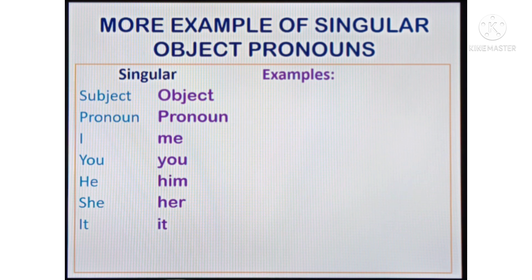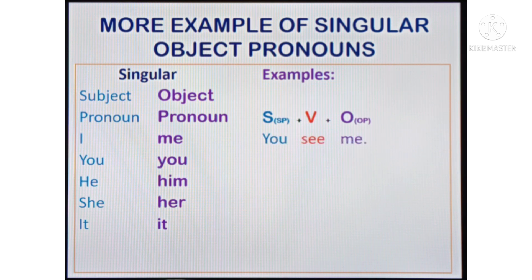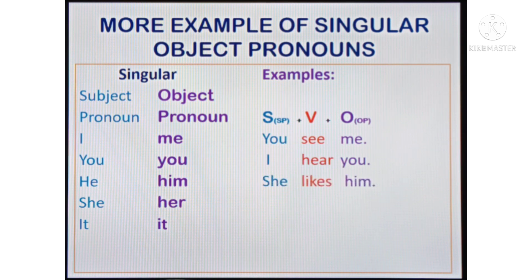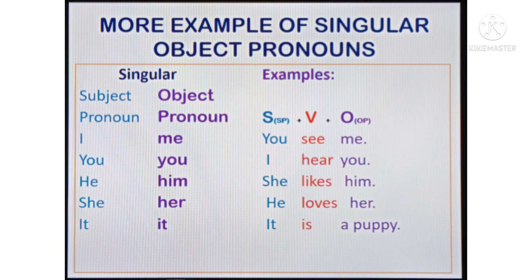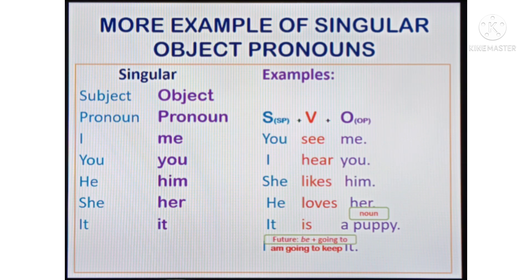More examples following the pattern subject pronoun plus verb plus object pronoun: 'You see me. I hear you. She likes him. He loves her.' It is a puppy — 'I am going to keep it.' The puppy is a noun and we use the future 'be going to' form. It's easy, isn't it?